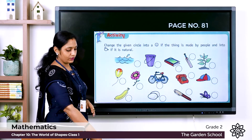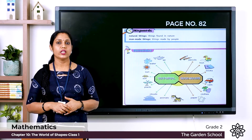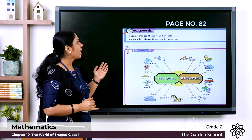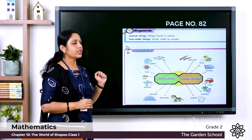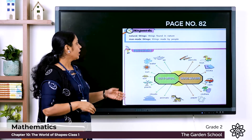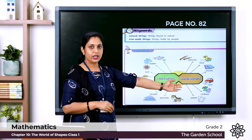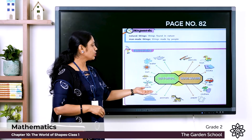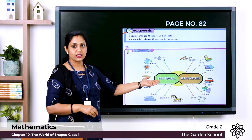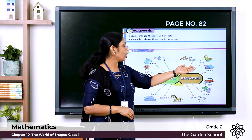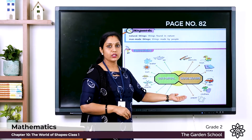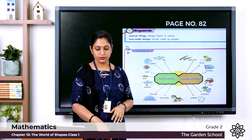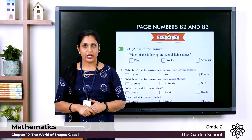On page number 82 there are some keywords. Natural things are things found in nature. Man-made things are things made by people. Points to remember: air, water, sun, soil, plants, clouds, and animals found in nature are natural things. Pencils, toys, books, cars, clothes, and paper are all man-made things, made out of natural things.